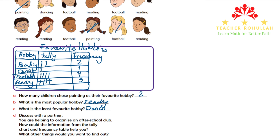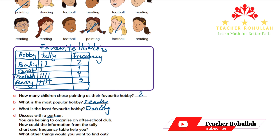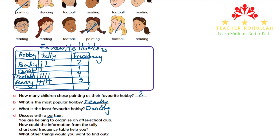In reality, most students probably like dancing more than reading! Part D says: discuss with a partner — you are helping to organize an after-school club. How could the tally chart and frequency table help you? Since most students' favorite hobby is reading, we could organize a reading comprehension competition to find the best reader.